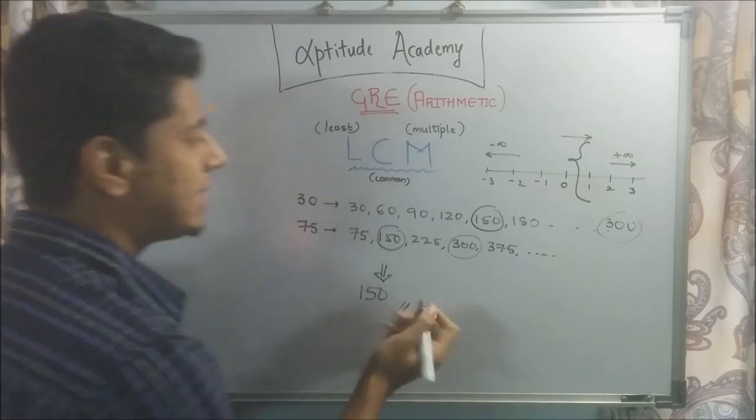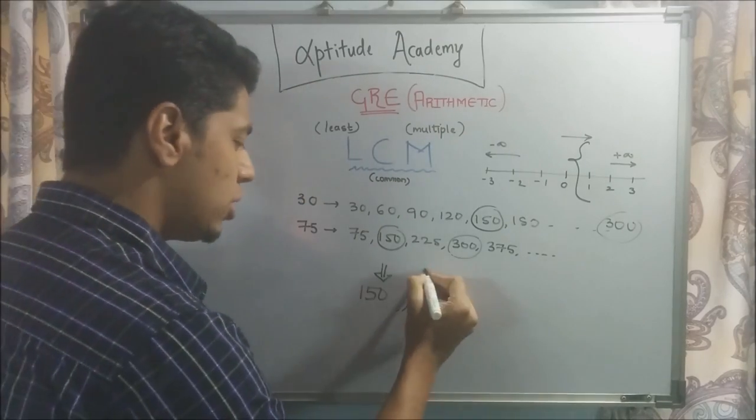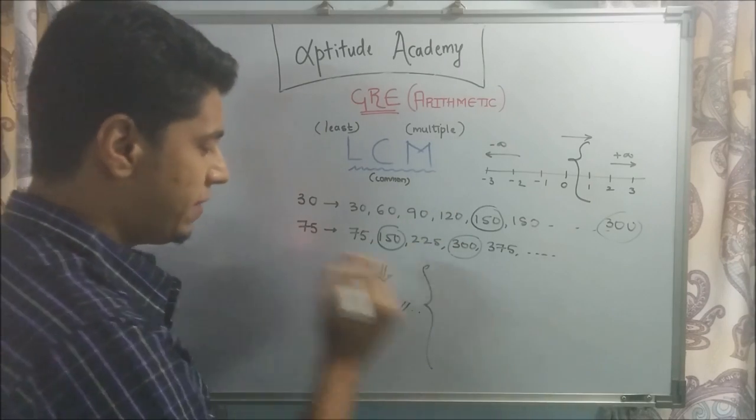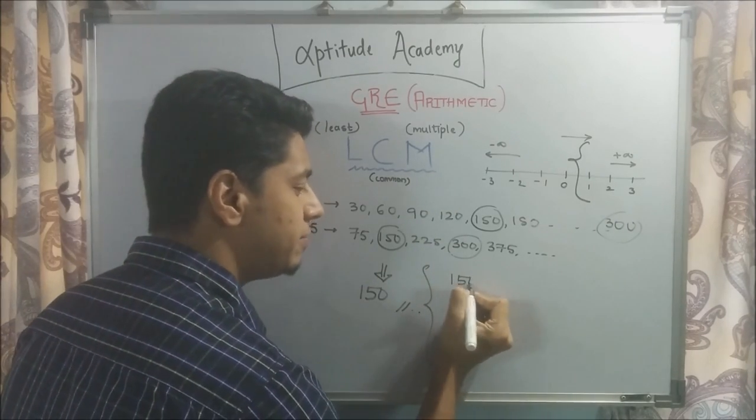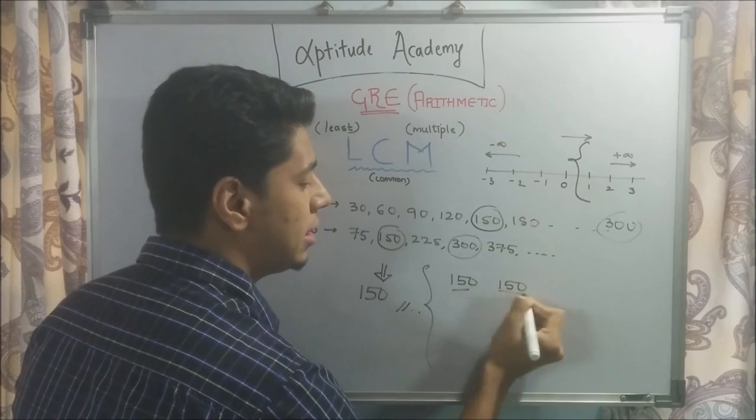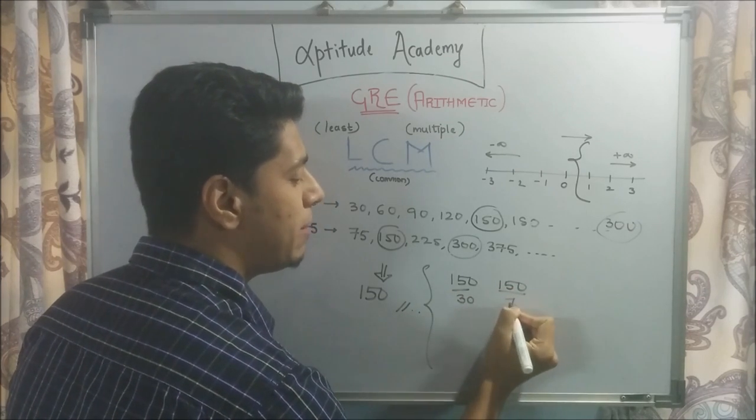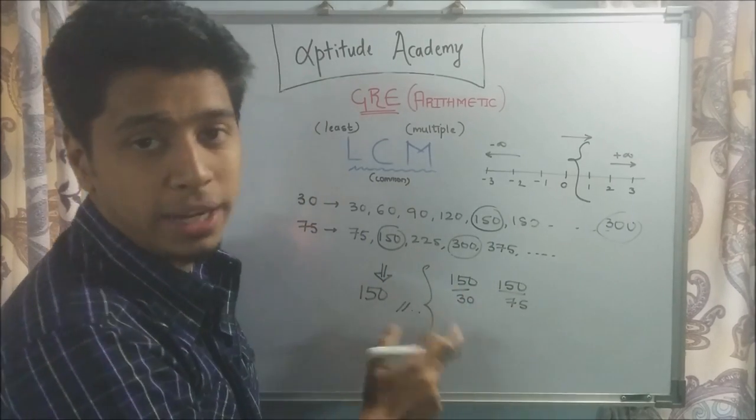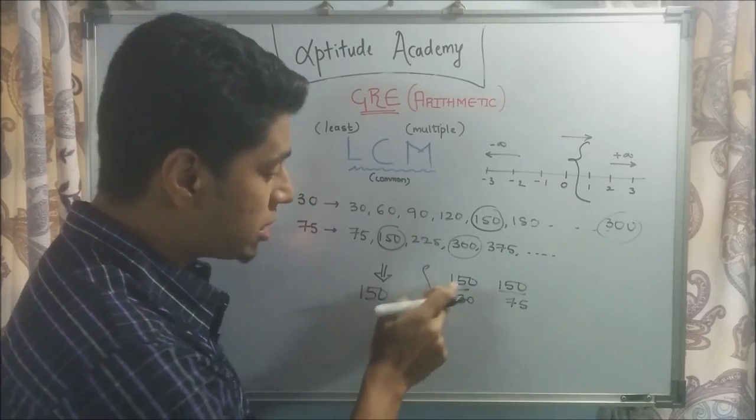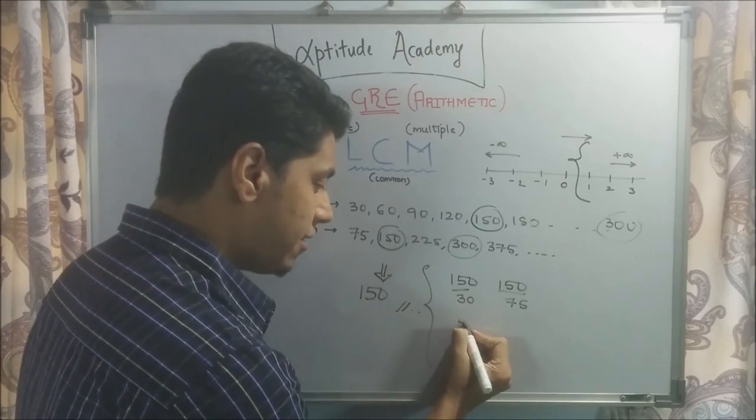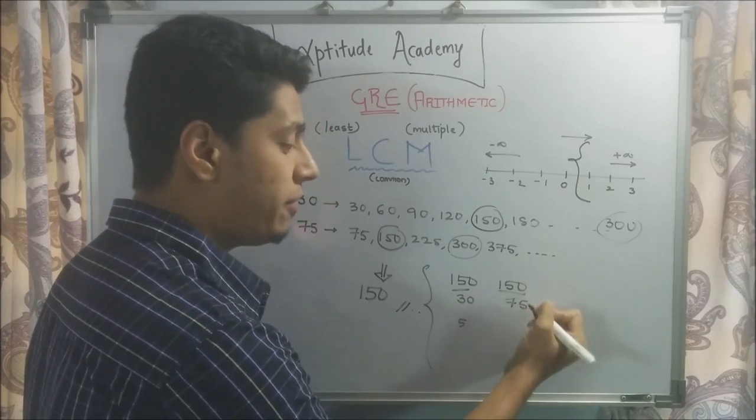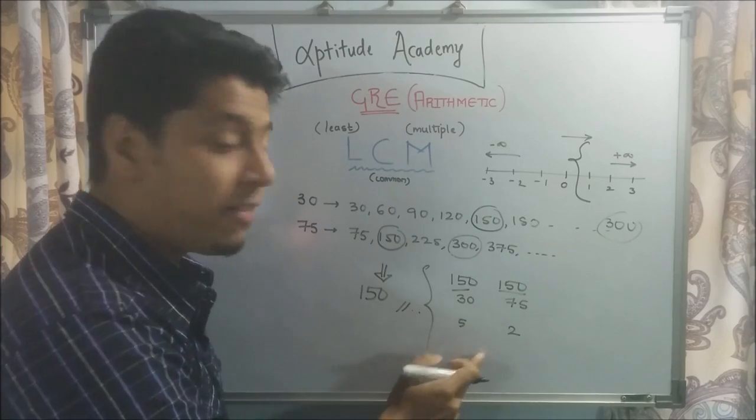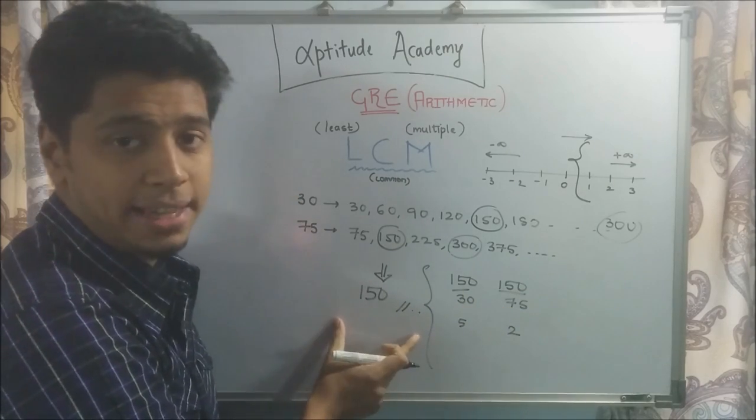Your LCM is 150. What this means is for 30 and 75, this number when divided by 30 and 75 is the least number which when divided will give you a proper integer. It will not give you 4.5, 3.6 like that. Because 150 by 30 is 5, and 150 by 75 is 2. There's no smaller number which will give you perfect integers when divided by both these numbers. That is basically what is LCM.